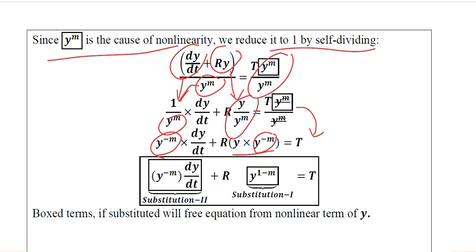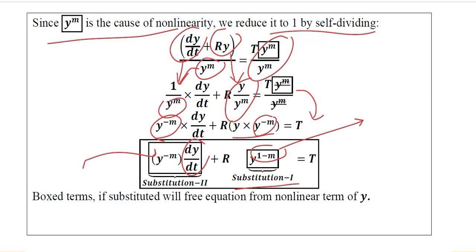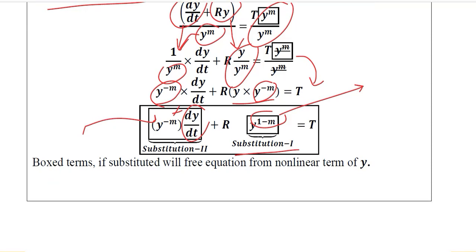The purpose of writing it this way is to facilitate our standard form. This is turning into a first-order differential equation because the power is going to be 1, though it's not 1 yet — we are going to make it 1. We need two substitutions: y raised to the power (1 minus m) appears here, and y raised to the power minus m appears as a coefficient. Substitution 1 will help us obtain substitution 2.